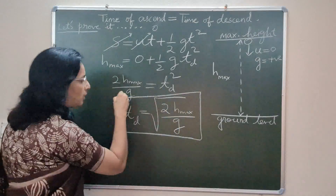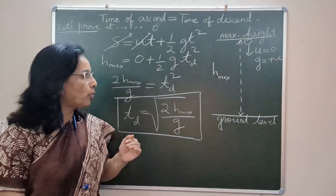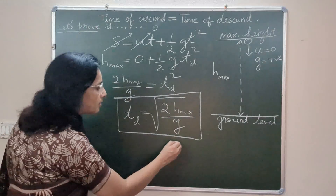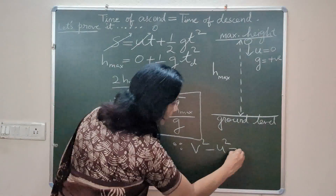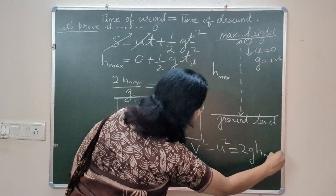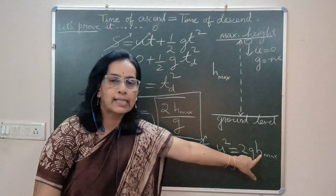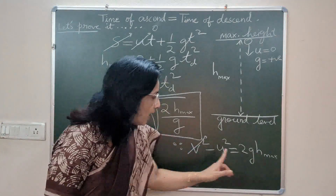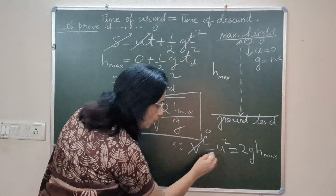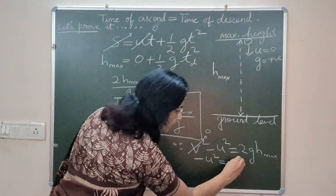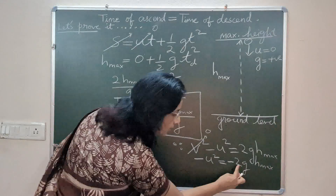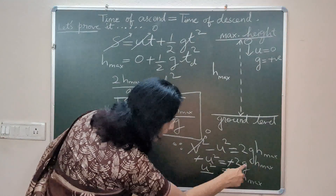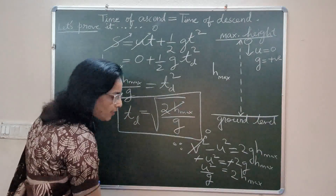Now, to prove that time of ascent and time of descent are the same, we need to find the value of h_max. We will use the third equation of motion: v² − u² = 2gs, writing s as h_max. Since the object reaches maximum height, final velocity is zero and g is negative. So the expression becomes −u² = −2g·h_max, and cancelling the negatives, 2h_max = u²/g.